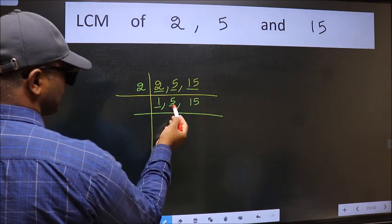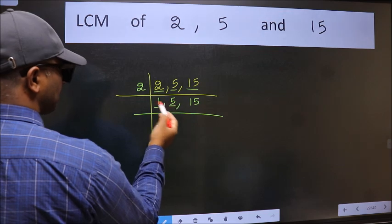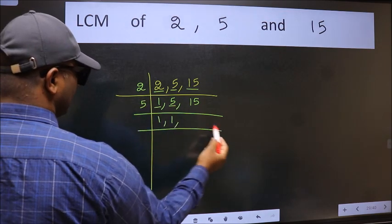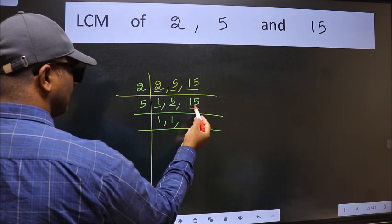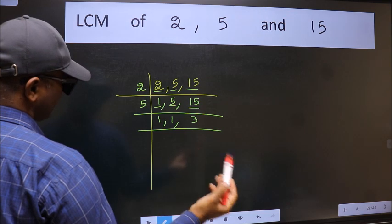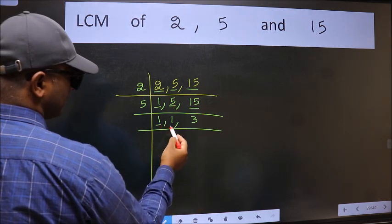So focus on the next number 5. 5 is a prime number so 5 once 5. The other number 15, when do we get 15 in 5 table? 5, 3 is 15. Now we got 1 here and here.